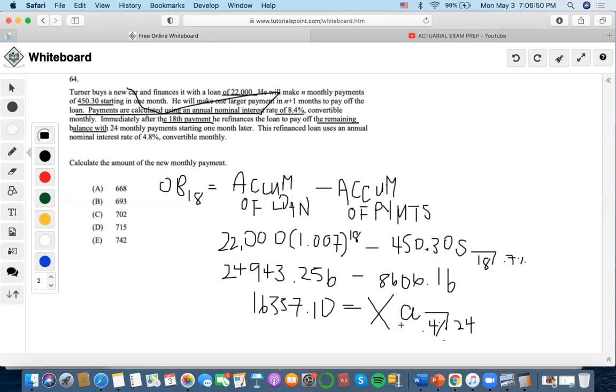So we're going to take our TVM again. We're going to see that 16337.10 is the present value, 0.4% interest rate, 24 number of periods. Here's 0 for future value, and compute payment.